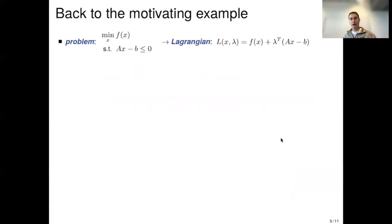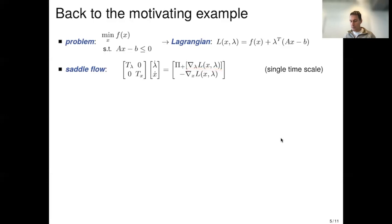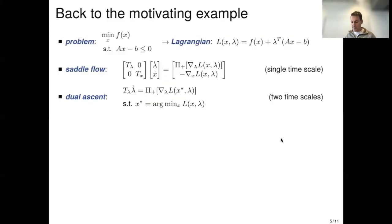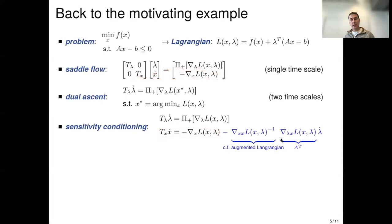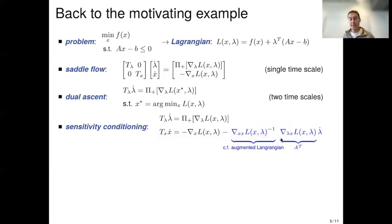We've seen the saddle flow going up in the lambda direction and down in the x direction with some time constants — this is the single-timescale interconnection. Dual ascent is the two-timescale version where the second iteration is infinitely fast. With sensitivity conditioning, we run a gradient descent on the primal variable with time constant t, then add the sensitivity term: the sensitivity matrix times lambda-dot. The sensitivity matrix turns out to be A-transpose times the inverse Hessian of the cost — somewhat reminiscent of a Newton flow.